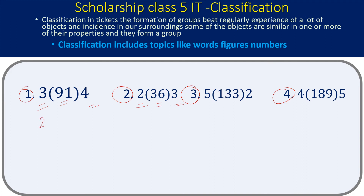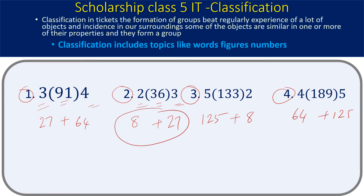The connection involves cubes. 3 cubed is 27, 4 cubed is 64; 27 + 64 = 91 — correct. 2 cubed is 8, 3 cubed is 27; 8 + 27 = 35 — but the bracket shows 36, so this is the odd one. 5 cubed is 125, 2 cubed is 8; 125 + 8 = 133 — correct. 4 cubed is 64, 5 cubed is 125; 64 + 125 = 189 — correct. So the second one is the odd man out.